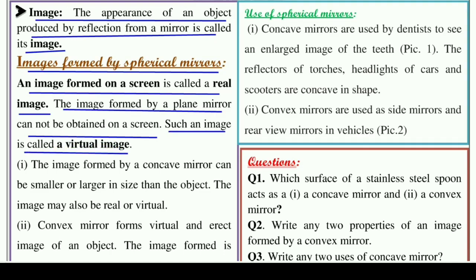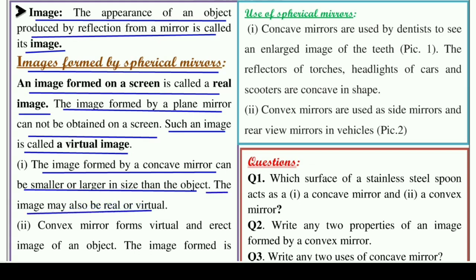इस तरीके की image को हम virtual image कहते हैं, जो plane mirror में दिखाई देती है। The image formed by a concave mirror can be smaller or larger than the object. जब आप concave mirror में किसी object की image देखते हैं, तो वो image के size से छोटी या बड़ी दोनों हो सकती है। Concave mirror से बनने वाली image real भी हो सकती है और virtual भी हो सकती है।